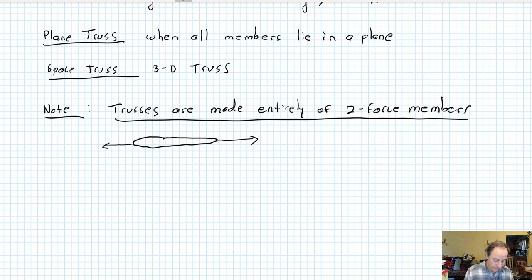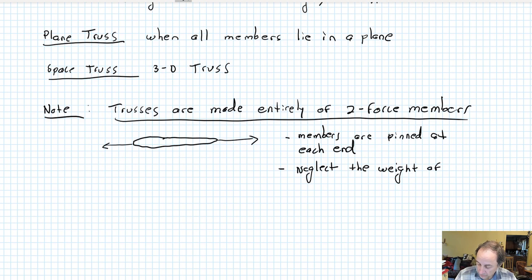This also means that the members are pinned at each end, because remember they have to be able to rotate so that the forces can line up to be collinear. So this means in turn that we are neglecting the mass, or let's say the weight, because we're talking forces, the weight of each member.